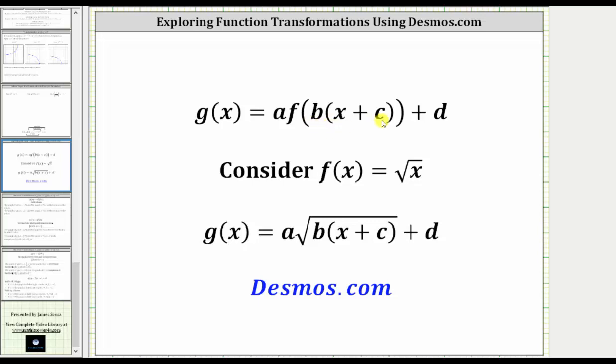For this exploration, we will let f of x equal the square root of x, and g of x equal a times the square root of the quantity b times x plus c plus d. Then we'll have sliders to change the values of a, b, c, and d using Desmos.com.